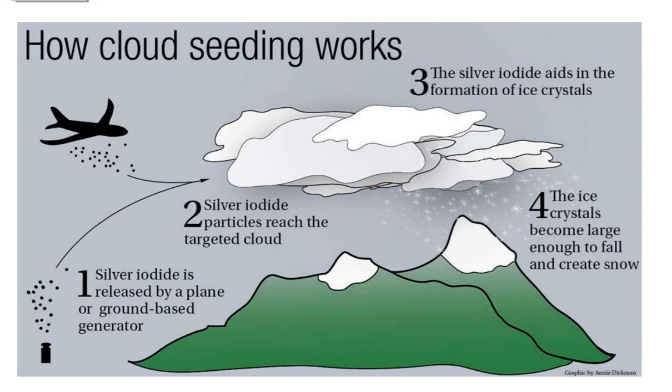How cloud seeding works: Number one, silver iodide is released by a plane or ground-based generator. Number two, silver iodide particles reach the targeted clouds. Third, the silver iodide aids in the formation of ice crystals. Four, ice crystals become large enough to fall and create snow.